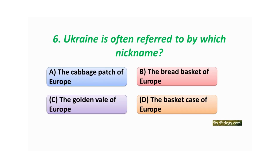Question number six: Ukraine is often referred to by which nickname? Option A: The Cabbage Patch of Europe. Option B: The Breadbasket of Europe. Option C: The Golden Well of Europe. Option D: The Basket Case of Europe.